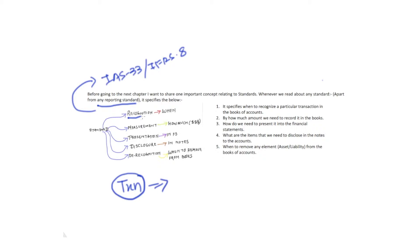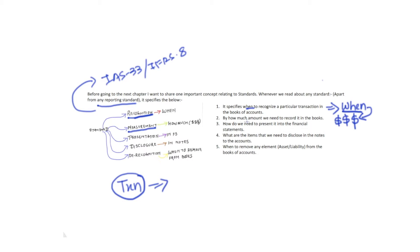The first point is recognition. The standard will specify the timing — when do we need to recognize a particular transaction in the books of accounts. The second point deals with measurement. Once we confirm that we need to recognize the transaction, the standard will tell us by how much amount we need to recognize it in the books of account — that is what we call measurement.